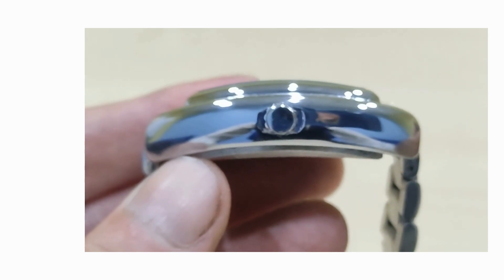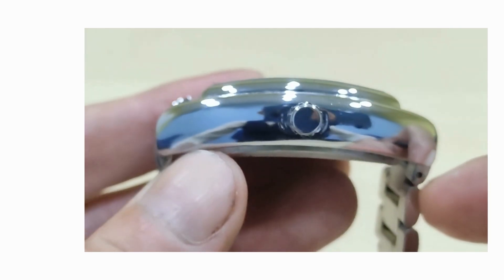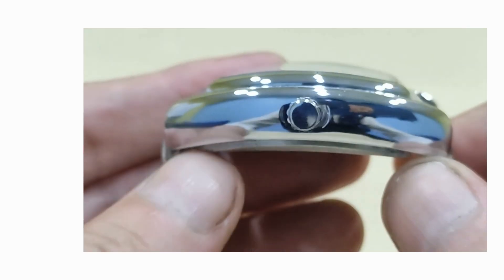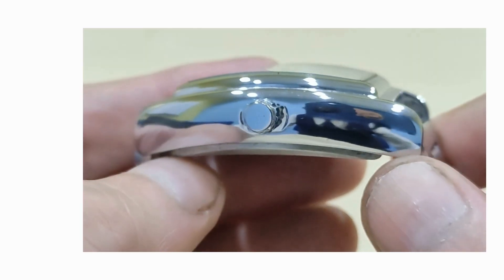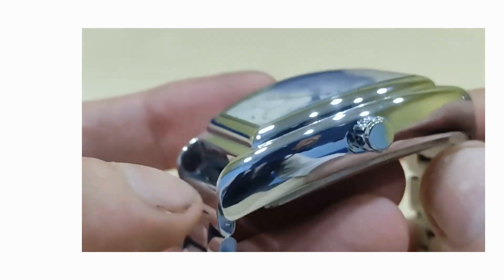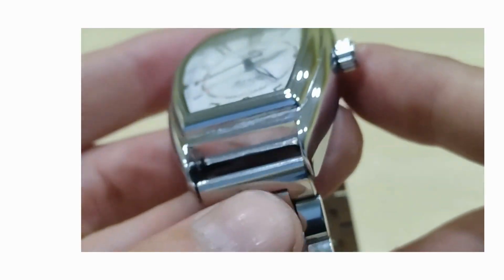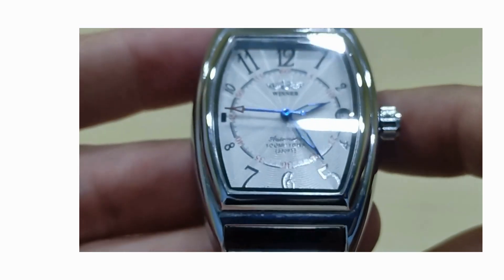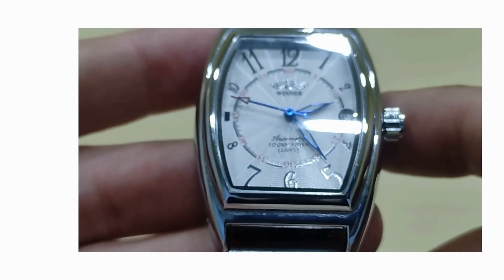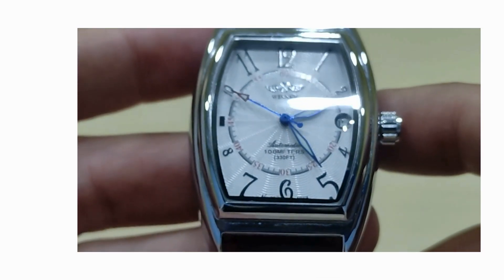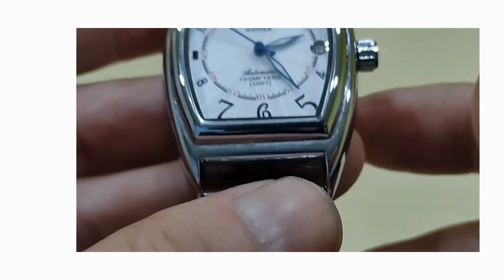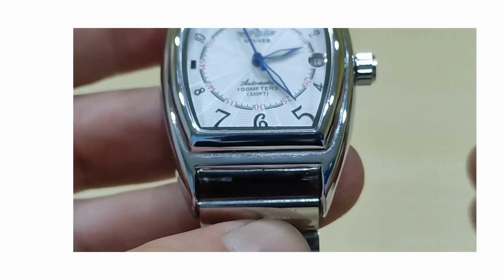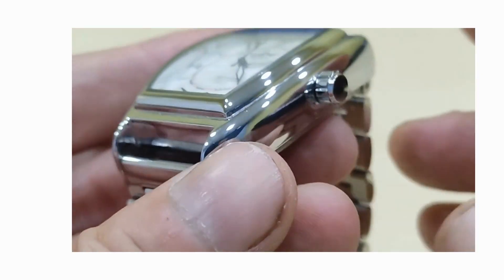The case itself is chrome-plated alloy, which I should mention the whole watch with bracelet including packaging and shipping from Shenzhen in China is just $14, so not much to complain about there. The weight is quite hefty based at 109 grams.